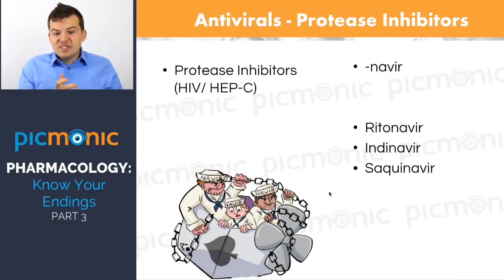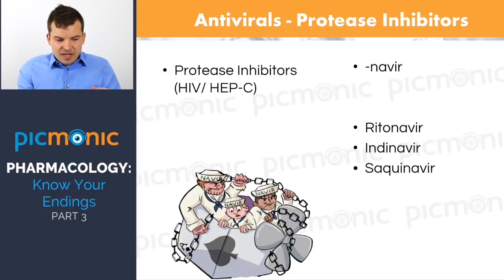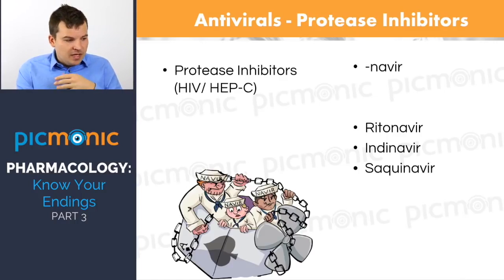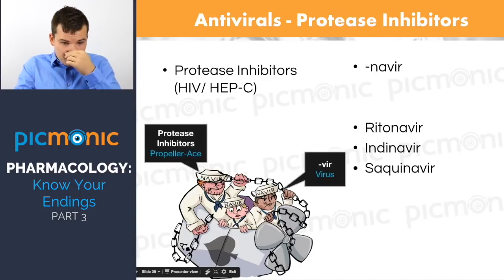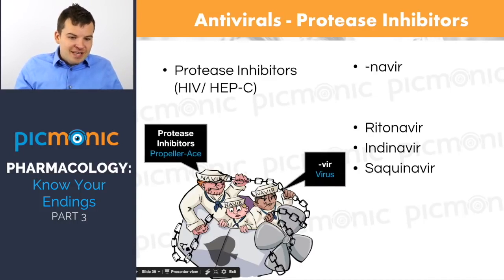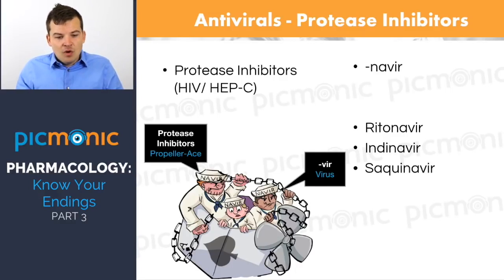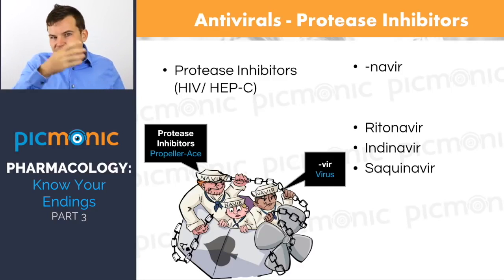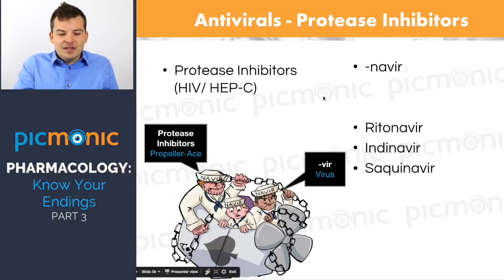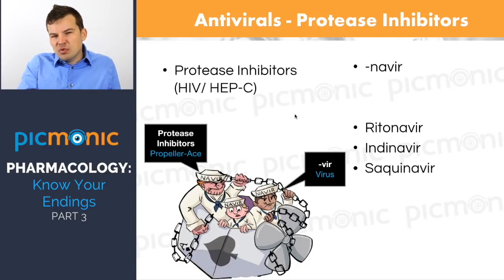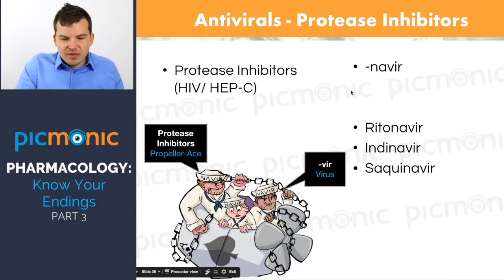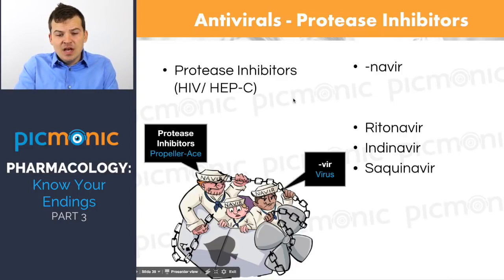A specific type of antiviral is protease inhibitors. When we said -vir — it's an antiviral — but there are different types. Protease inhibitors end in -navir. We have the Picmonic Navy guys with a propeller ACE to help remember protease, and our Navy virus for -navir. Examples include ritonavir, indinavir, saquinavir. The key point is just identifying that they're protease inhibitors and recognizing the -navir ending.